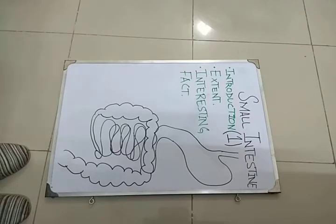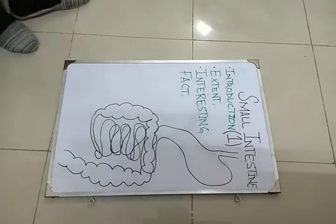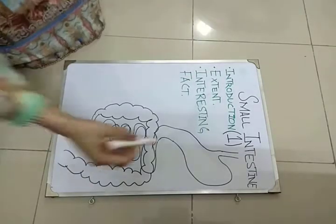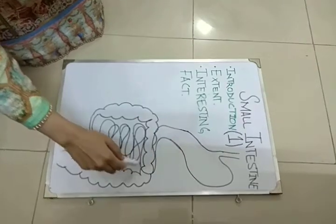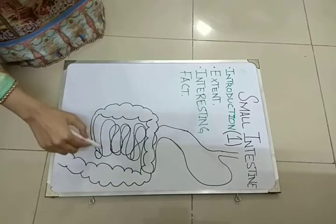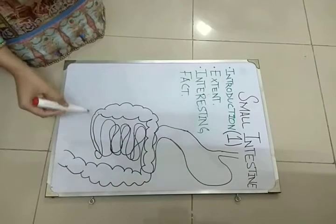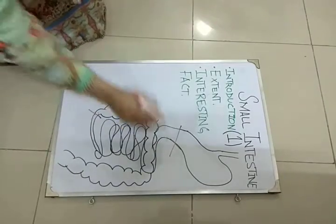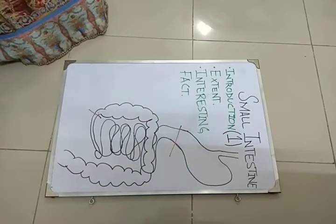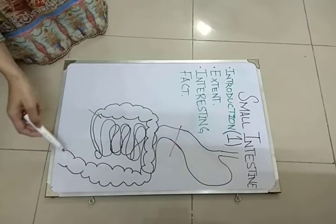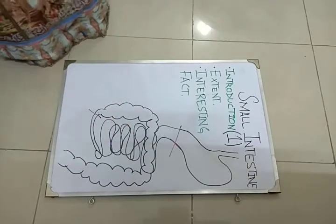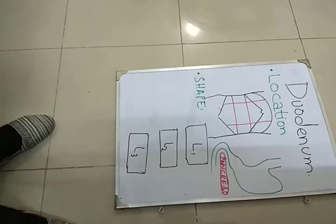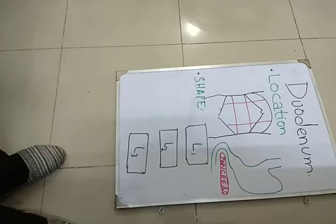Its extent: it extends from the pylorus of the stomach as the duodenum, then the jejunum, ilium, and then the ileocecal junction. From the pylorus to the ileocecal junction, this is the small intestine. The part beyond that is the large intestine — the ascending colon, transverse, and descending colon. The small intestine is further divided into duodenum, jejunum, and ilium.